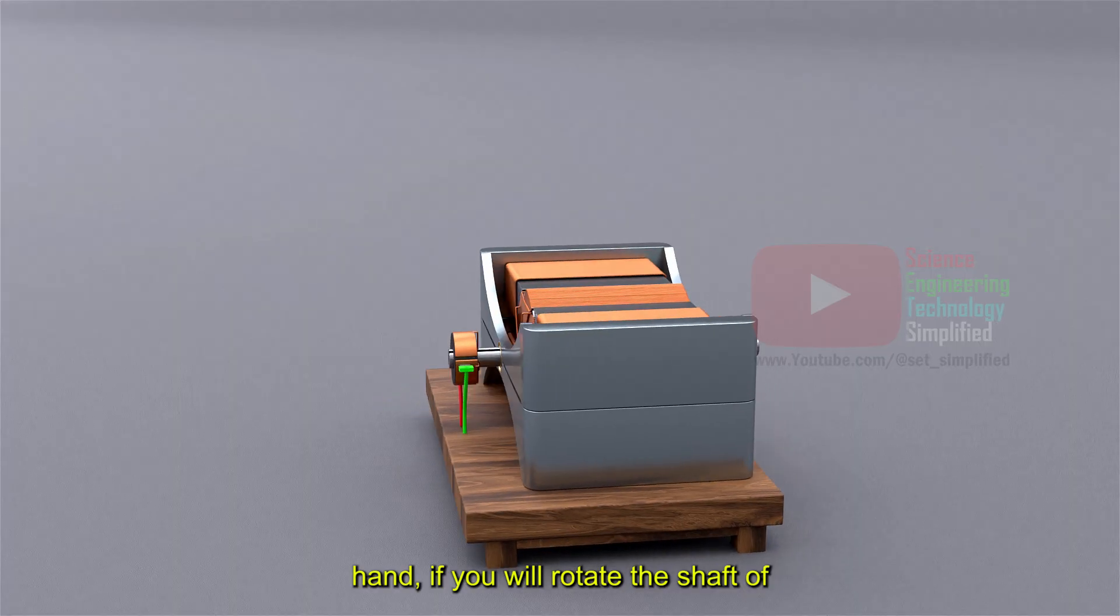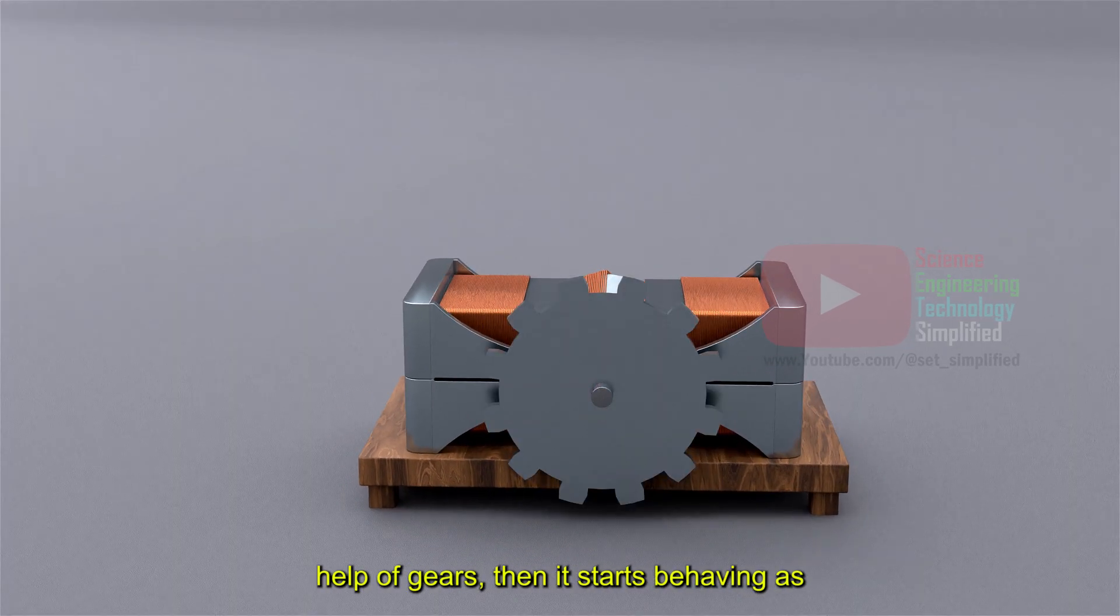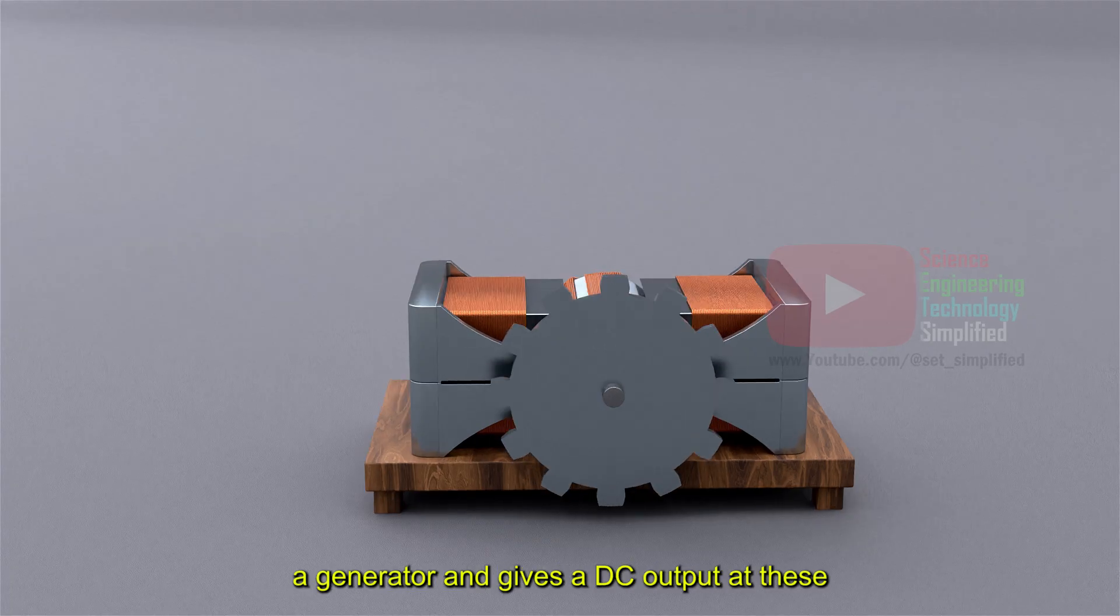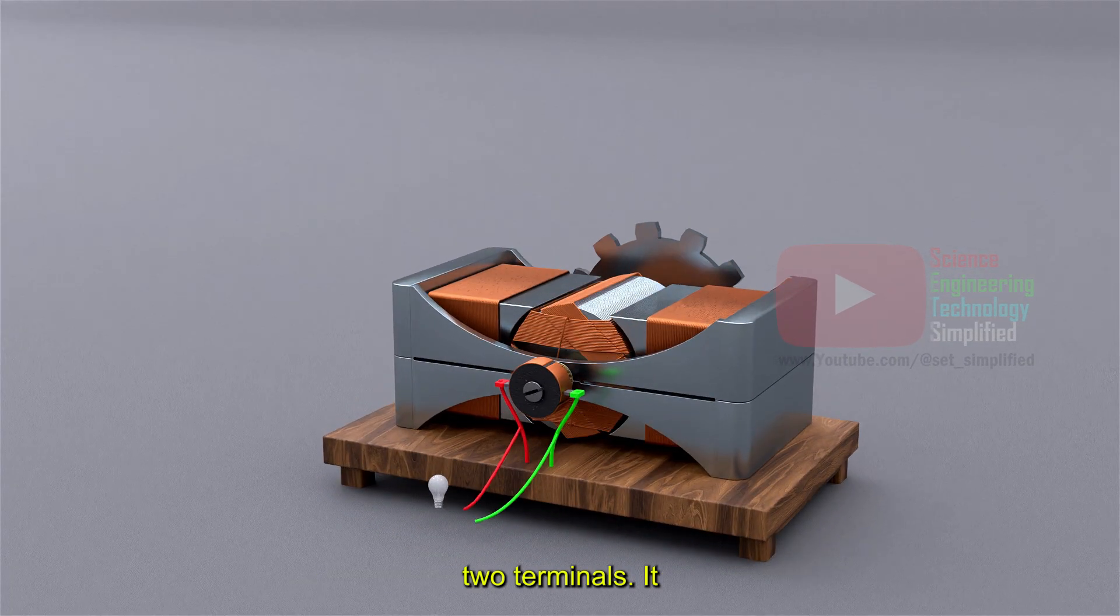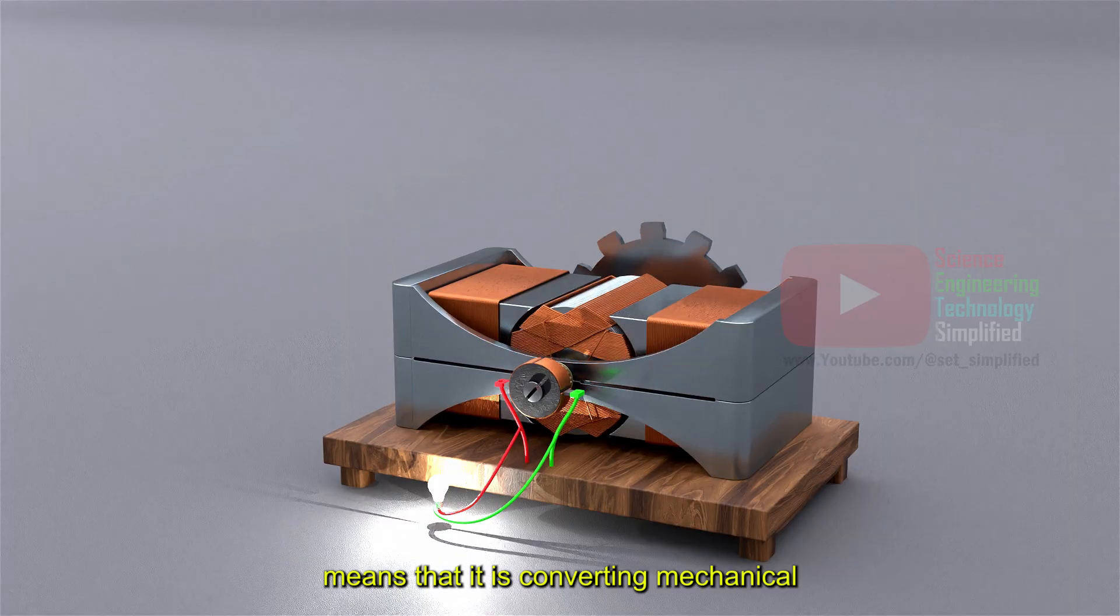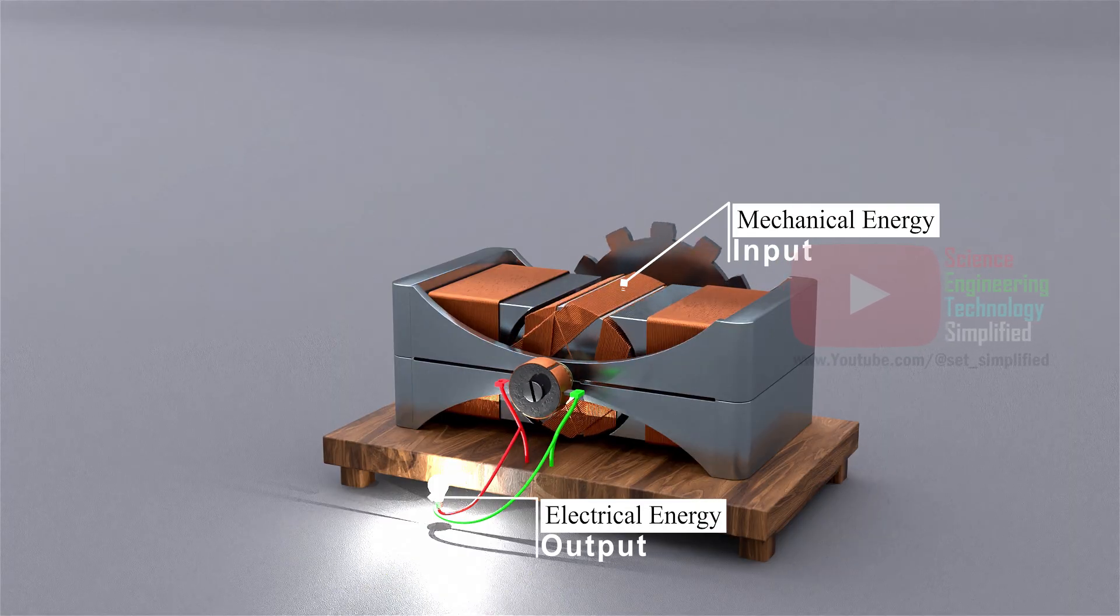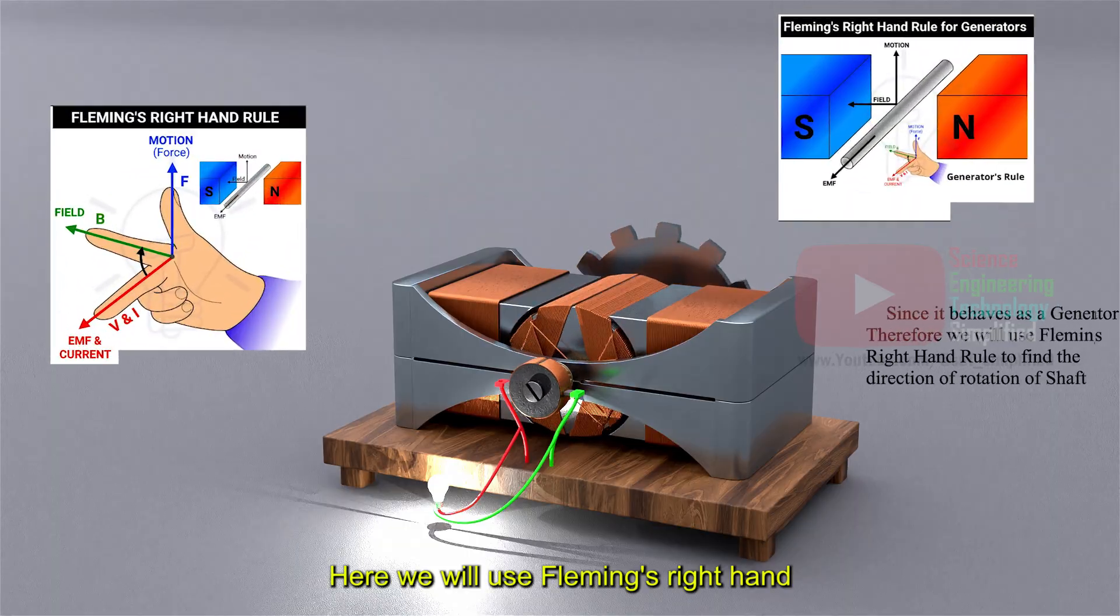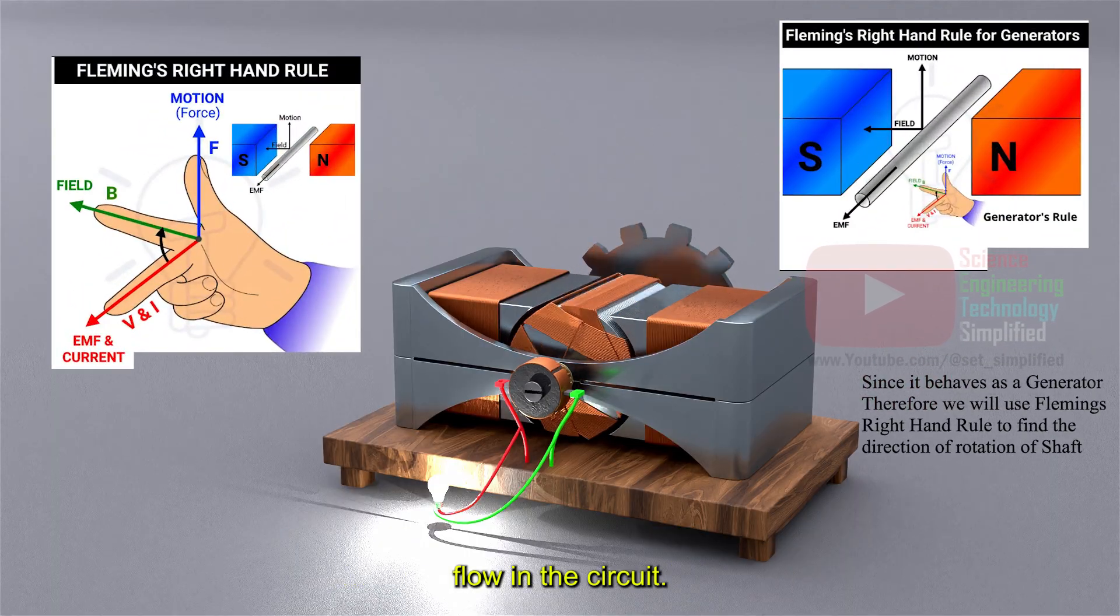On the other hand, if you will rotate the shaft of this new dynamo electric machine with the help of gears, then it starts behaving as a generator and gives a DC output at these two terminals. It means that it is converting mechanical energy into electrical energy. Here we will use Fleming's right-hand rule to find the direction of current flow in the circuit.